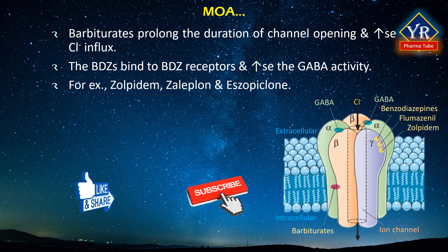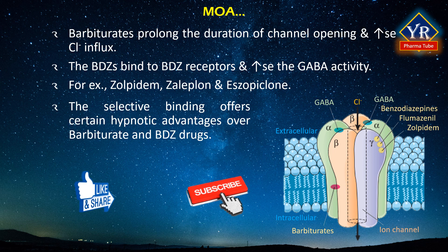Drugs such as zolpidem, zaleplon, and eszopiclone demonstrate a more selective binding to a subunit of the benzodiazepine receptor referred to as the BZ1 receptor. This selective binding offers certain hypnotic advantages over barbiturate and benzodiazepine drugs. Each of these drug classes acts to facilitate the inhibitory reactions of GABA to increase chloride ion influx. The diagram shows the location of receptor sites for GABA and the various hypnotic drugs. The hypnotic drugs enhance the inhibitory actions of GABA to increase the influx of chloride ions and inhibit neuronal activity.